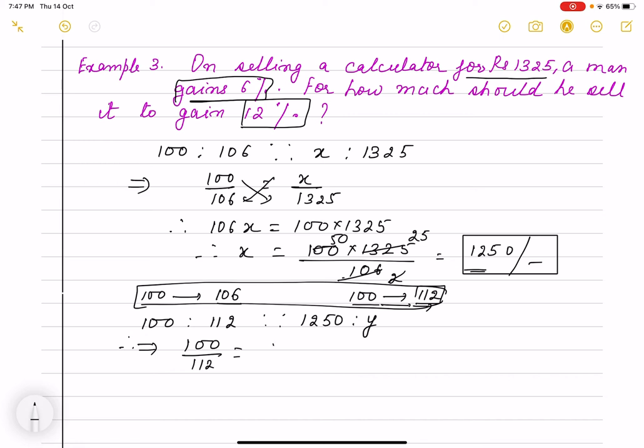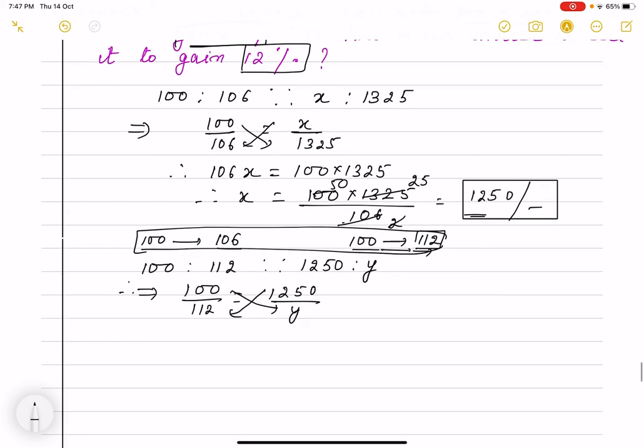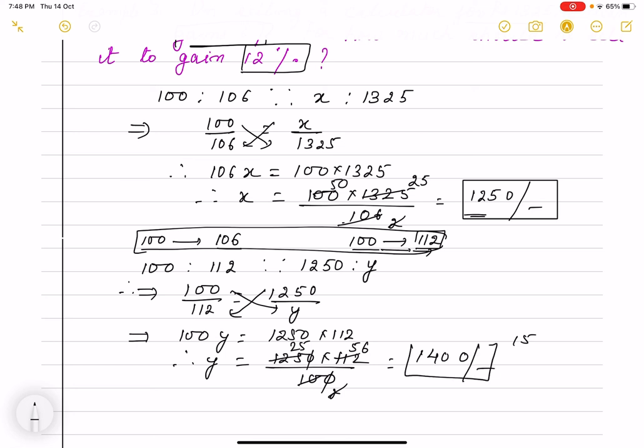112, you can do by unitary method also, formula method also, but whatever you will do, you must understand why you are doing it. It is 100Y is 1250 into 112, so Y will be 1250 into 12 by 100. Cross: 525, 25, 25, 50, 15, 125, 140.